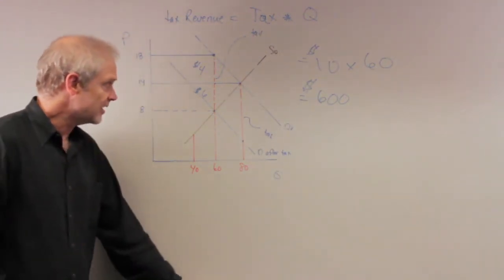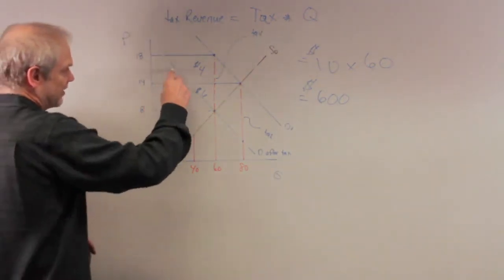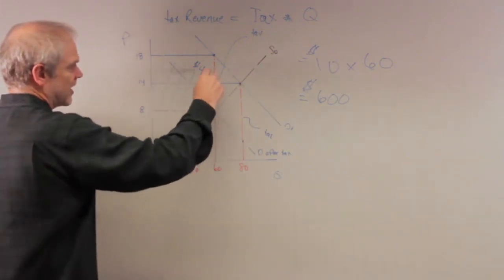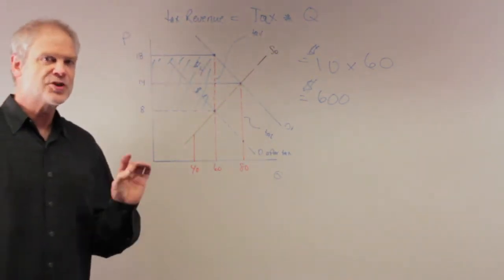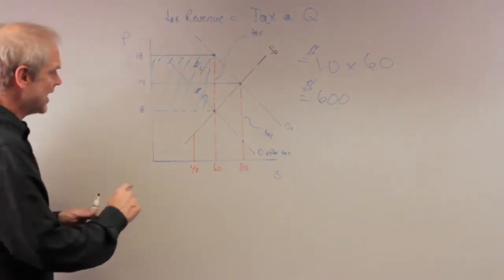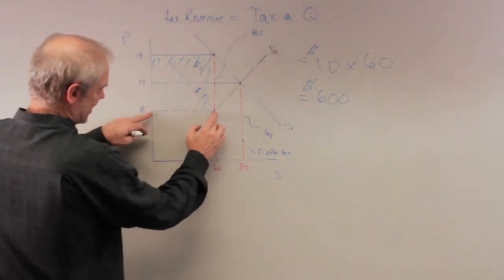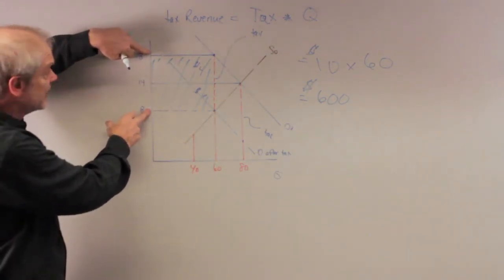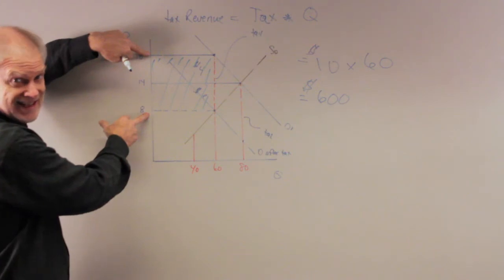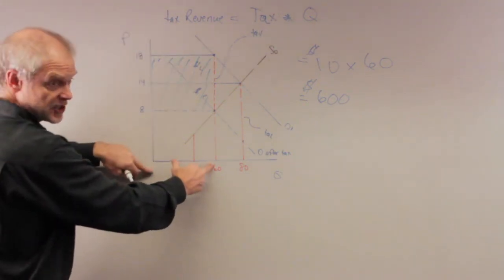If I wanted to draw it diagrammatically, I would say this area right in here that I'm drawing these crosshatches, this area shows me the revenue received by the government. Why? This is the 60 units. There's the 60 right there, measuring the 60 units. This distance right here is measured in dollars. This is the $10 in the tax that's being paid per 60 units.